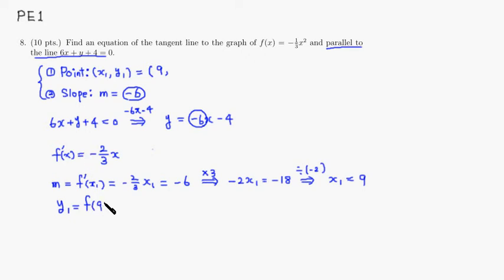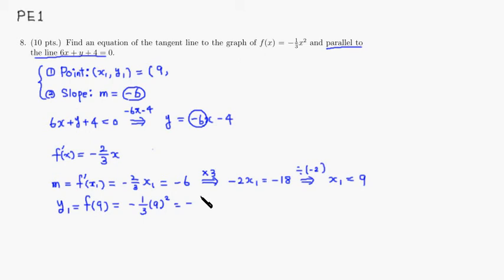To find the corresponding y₁, we plug x₁ = 9 into the original function (not the derivative): y₁ = −(1/3)(9²) = −(1/3)(81) = −27. So y₁ = −27.